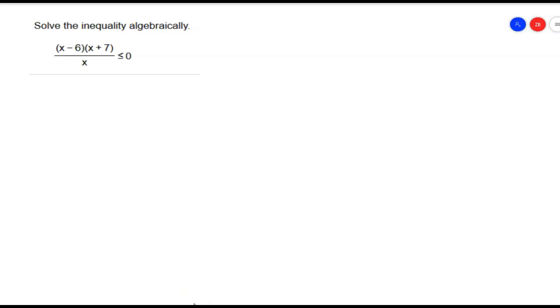Hey, this is Mr. Beckstrom, and today I want to take a look at a problem from section 4.6. This is polynomial and rational inequalities. So the problem here is they give us a rational function that says x minus 6 times x plus 7 divided by x is less than or equal to 0.